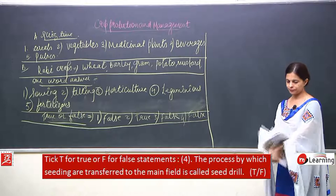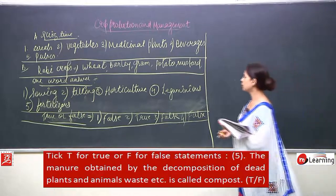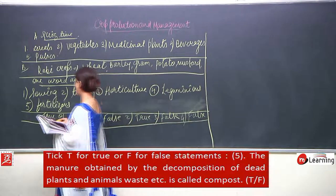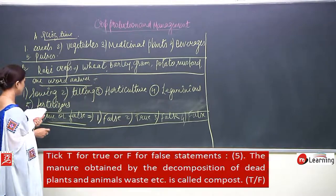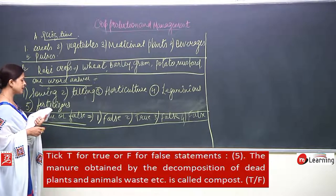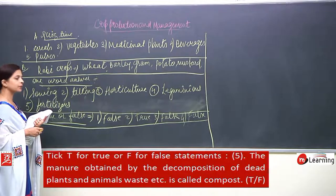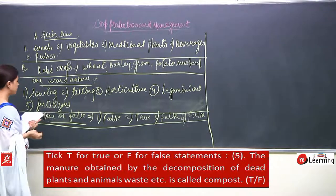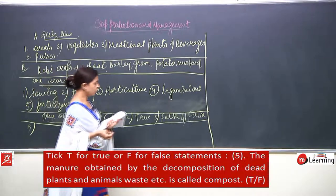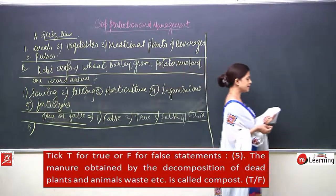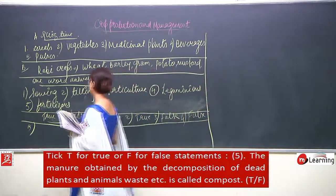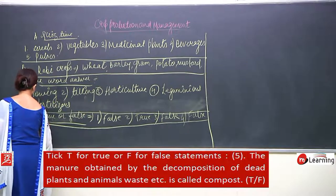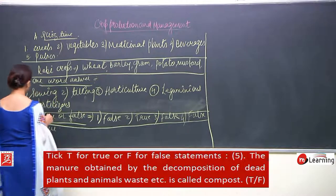Fifth: the manure obtained by the decomposition of dead plants and animal waste is called compost — true, it is very very true.